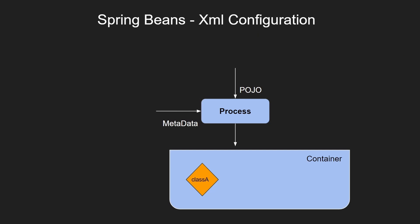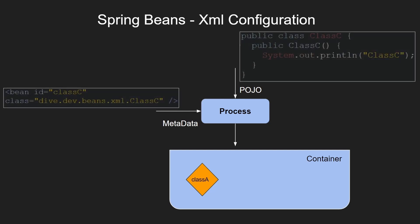For the XML configuration, the POJO class is class C, and the metadata information is present in the XML configuration, which has a bean tag. The ID is the class C — this will be the ID of the object created — along with the location of this class. After processing, it creates an object in the Spring container.